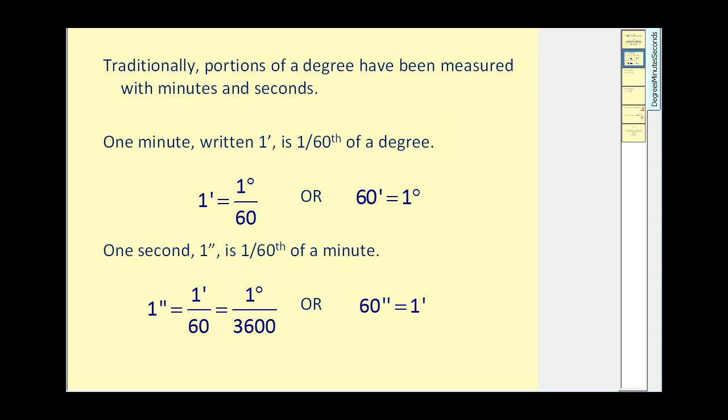Traditionally, portions of a degree have been measured with minutes and seconds. One minute is 1/60th of a degree, which can also be expressed as an equation. Or we can state that 60 minutes equals 1 degree.